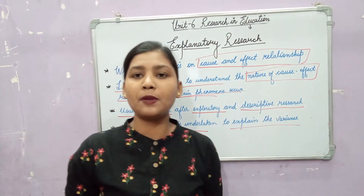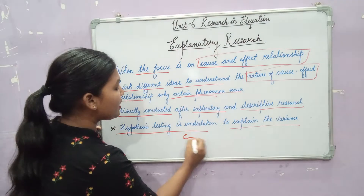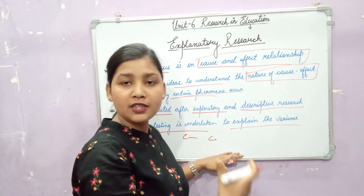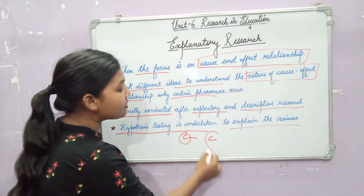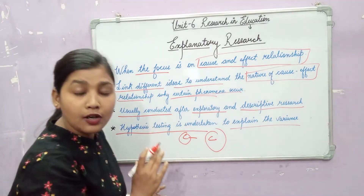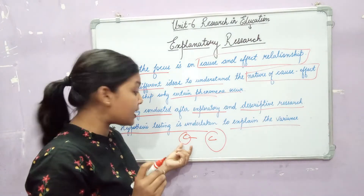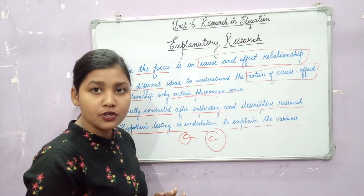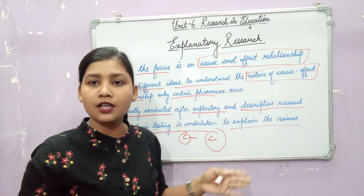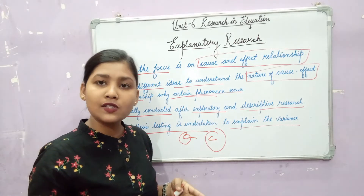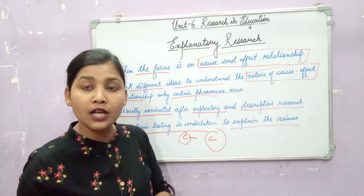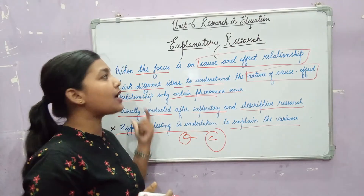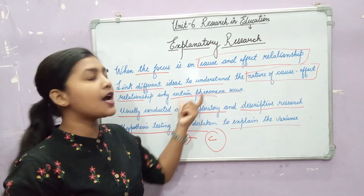For example, we talked about smokers — does smoking increase cancer? In your explanatory research about cigarettes and cancer, you try to find the cause and effect relationship. You form a hypothesis and test it. After hypothesis testing, you get a conclusion — that cigarette smoking causes cancer and damages the lungs. This is an explanatory type of research in which we try to know the cause and effect relationship.